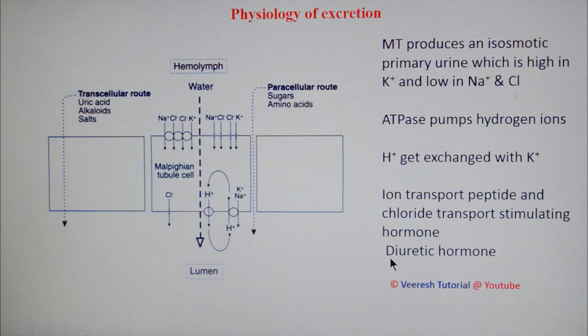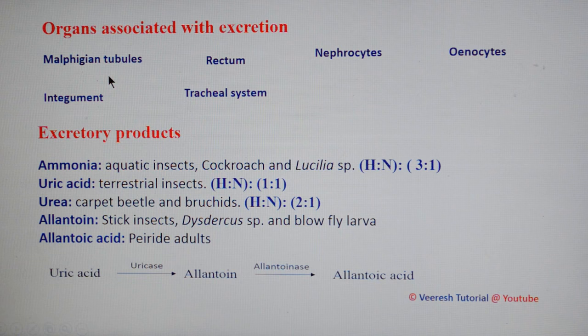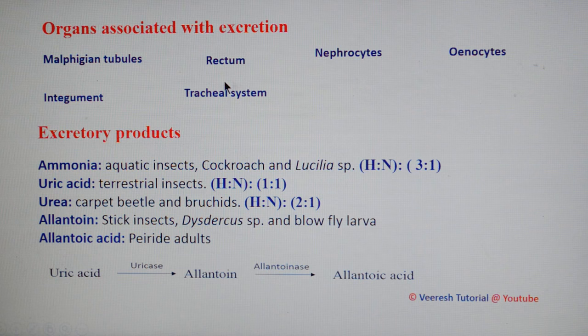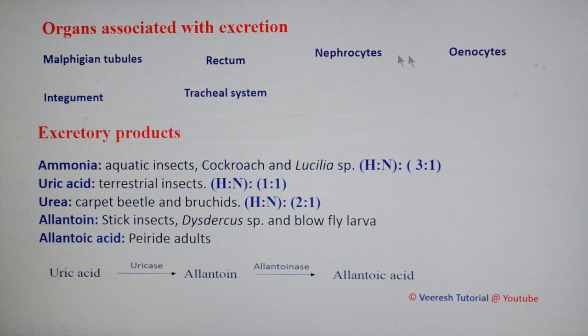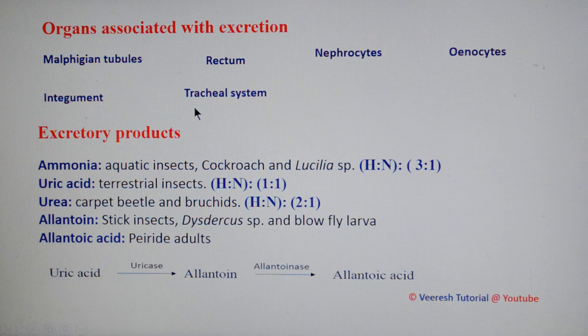Organs associated with excretion: First are the Malpighian tubules, involved in regulation of water, salt, and nitrogenous excretion. The rectum is also involved in reabsorption of solutes and water from urine. Pericytes are cardinal cells present on the heart surface that take up high molecular weight substances from the hemolymph which cannot be processed by Malpighian tubules. Oenocytes are specialized blood cells mainly involved in some excretory functions. The integument — molting is also a kind of excretory process where exuvia is eliminated from the insect body. The tracheal system is involved in removal of carbon dioxide.